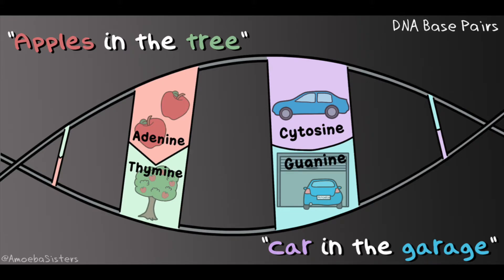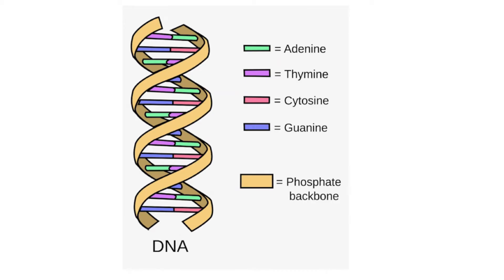You may know from prior biology courses that adenine pairs to thymine and guanine pairs to cytosine, which can be remembered using the mnemonic of apples in the tree and cars in the garage. But in real life this pairing does not just look like these little bars that are shown here in the diagram.